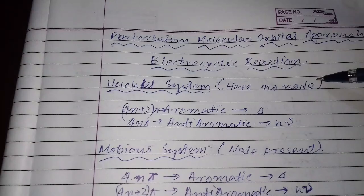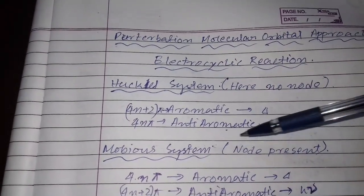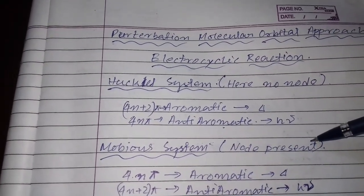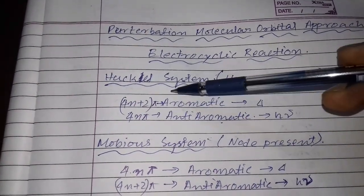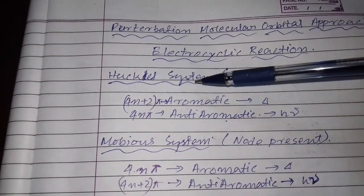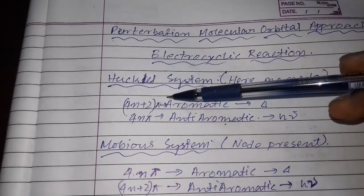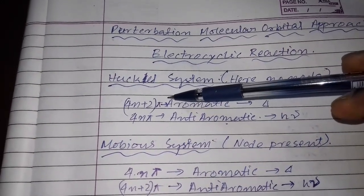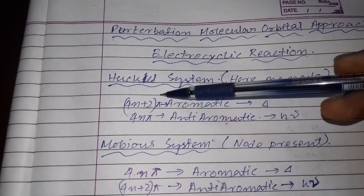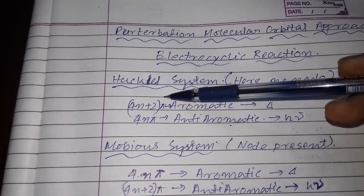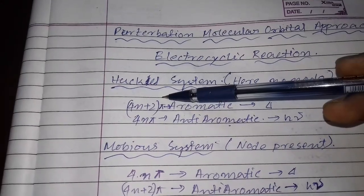In the Hückel system there is no node, and in the Möbius system nodes are present. In the Hückel system we know that 4n+2 pi electronic systems — such as the 2pi and 6pi electronic systems — are aromatic.